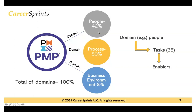The People domain would address all the elements that come along with people — so it could be communication, coordination, conflict resolution, team formation, team management, and teamwork. All these different elements that you can think of with regards to people and communication would fall under the People domain. Even things like leadership or servant leadership would fall under the People domain.